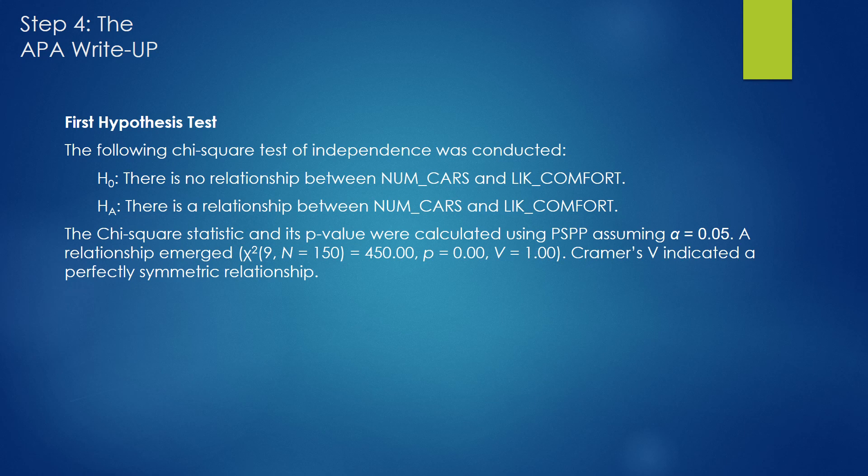Now onto the APA write-up of our results. The write-up consists of a level two header followed by the hypothesis test. As you can see, the null and alternative hypotheses are listed. Afterwards, we list the results of the test. We open up with a statement saying the chi-squared statistic and its p-value is calculated using PSPP, assuming alpha equals 0.05. That just warms up the audience to what you actually did. And then now we hit them with the results.